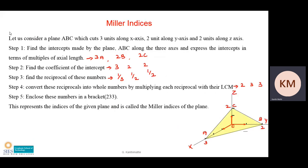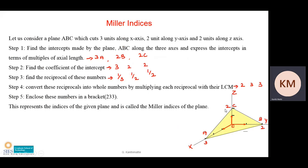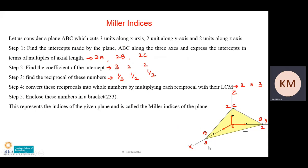Now let's see how to find Miller indices if a plane is given. Consider plane ABC, which cuts the x-axis at 3, the y-axis at 2, and the z-axis also at 2. We need to find the Miller indices for this particular plane. First, we find the intercepts made by the plane along the three coordinate axes: x-axis intercept is 3a, y-axis intercept is 2b, and z-axis intercept is 2c.